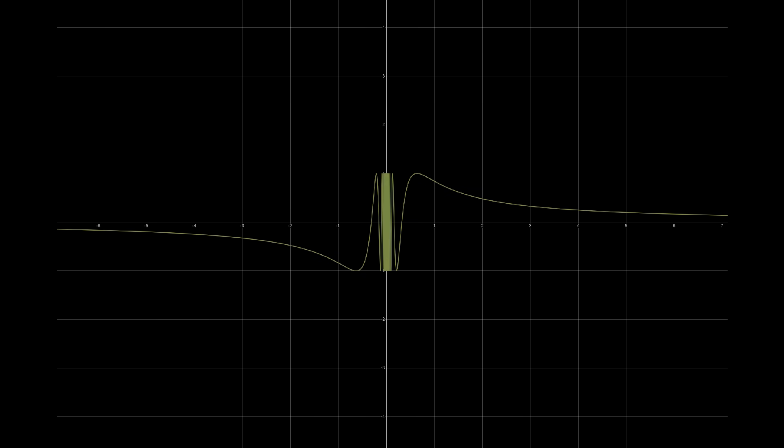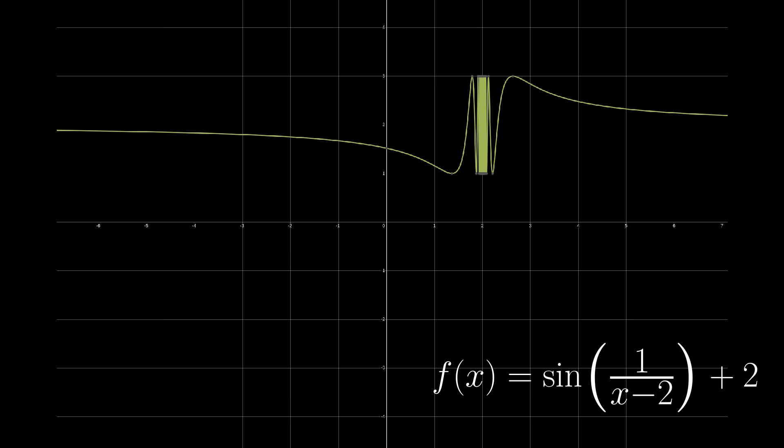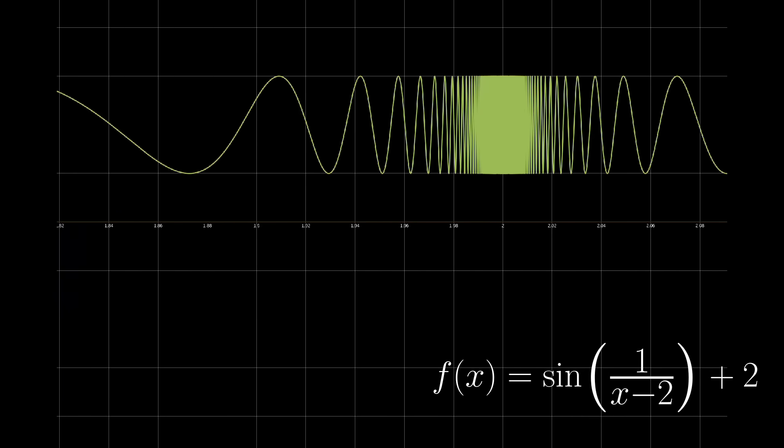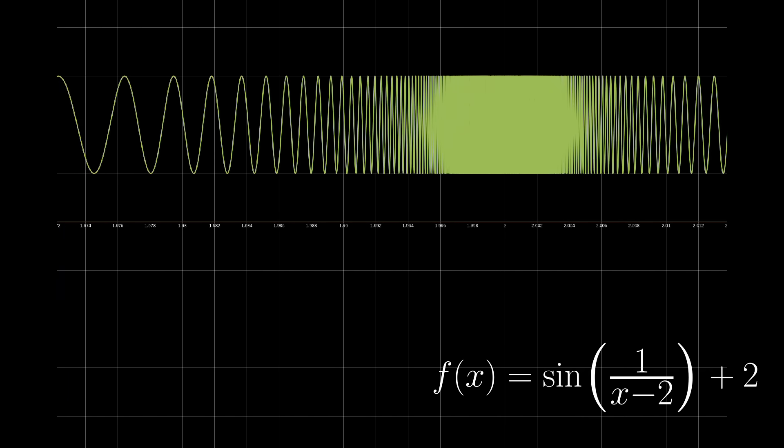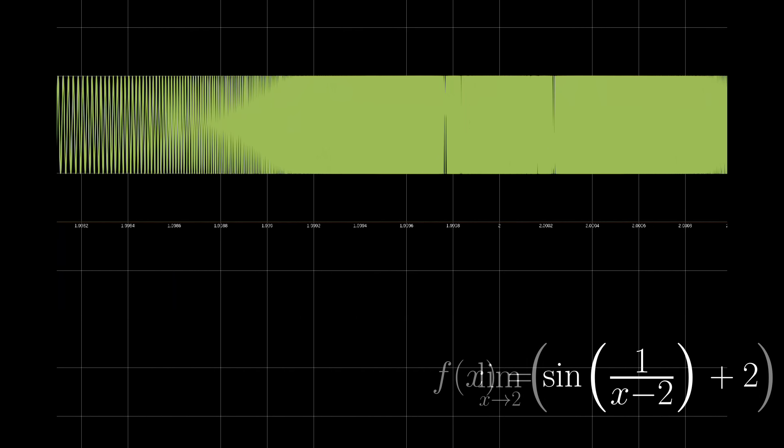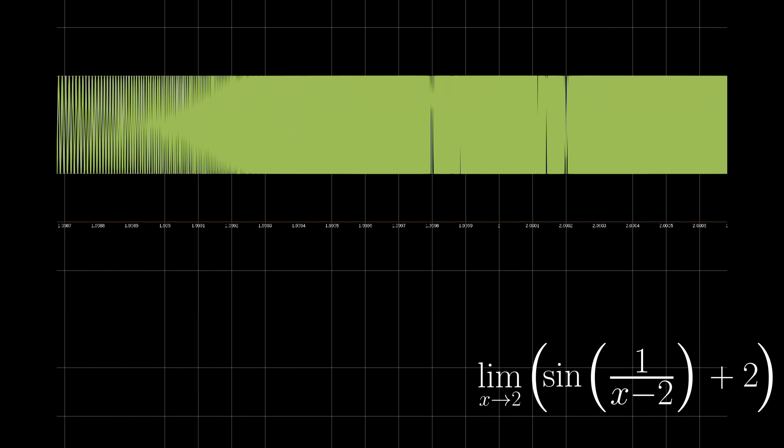Okay, now check out this classic example, sine of 1 over x. Or actually, let's do sine of 1 over x minus 2 plus 2, translating it up and to the right for ease of visualization. As we approach x equals 2, 1 over x minus 2 blows up to infinity, which causes the sine wave to wiggle faster and faster and faster and faster. So what if we try to take the limit as x approaches 2?